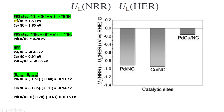The potential determining step for Pd-NC and Cu-NC is the first protonation step — N2 to NNH formation. For Pd-NC the RDS is 1.31 eV, for Cu-NC it is 1.85 eV. For the dual atom Pd-Cu-NC catalyst, the rate determining step is NH2 to NH3 formation. For HER: Pd is 0.40, copper is 0.91, and Pd-Cu is 0.63.